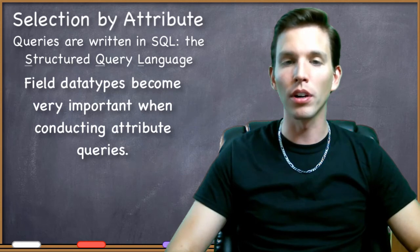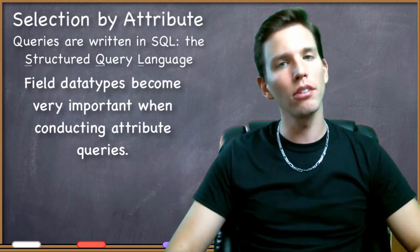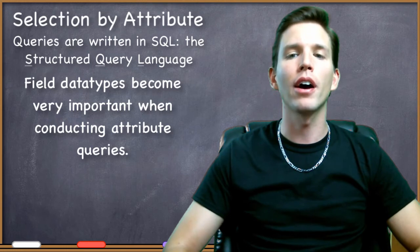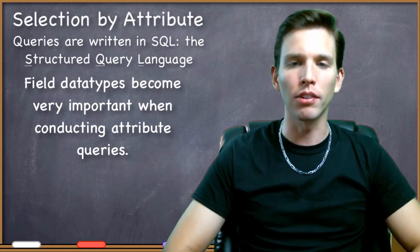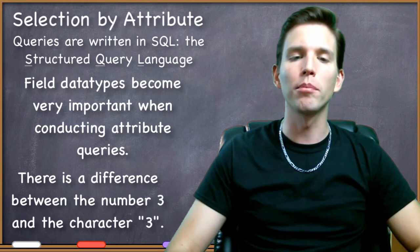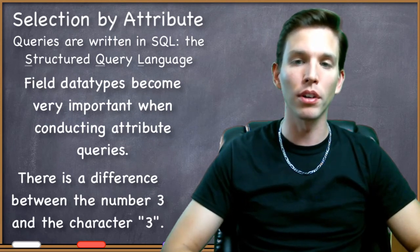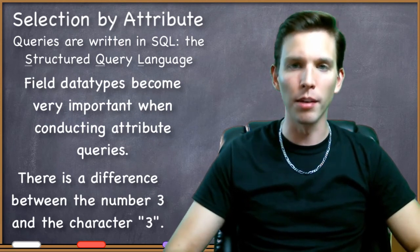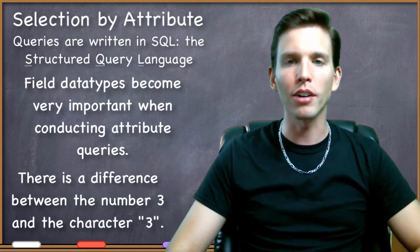The computer can determine which features have a value in a particular field that are greater than or less than three, but it can't determine which rows in a field have values of greater than or less than the character three. You can see here why it's very important to make sure that your data is stored in fields with the correct type.